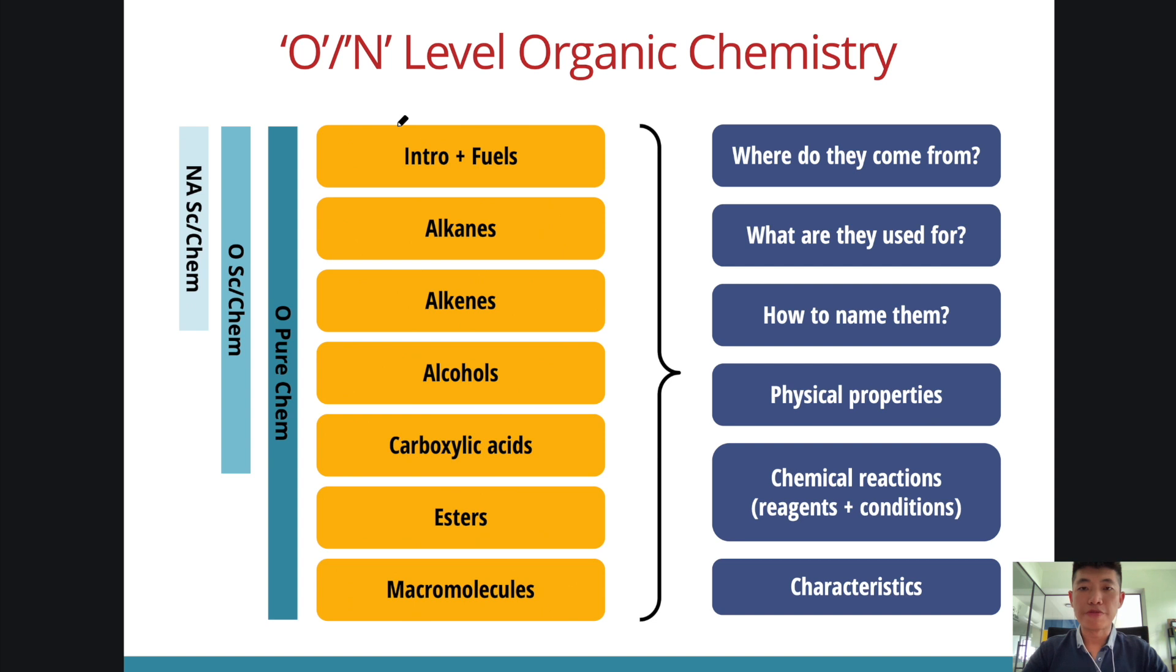This is a brief overview of the content covered in the O and N level organic chemistry syllabus. You notice that they are broken down into various subtopics and depending on which exam you are sitting for, the breadth of content that you are covering will be different. But for each of these subtopics, we are going to address the same questions. Where do these organic molecules come from? What are they used for? How do we name them? What are their physical properties, chemical properties and characteristics?